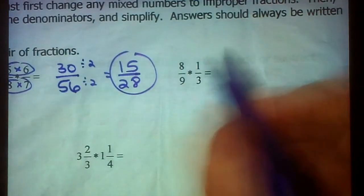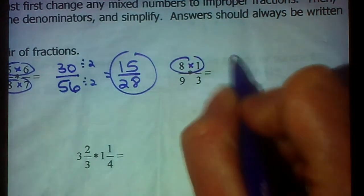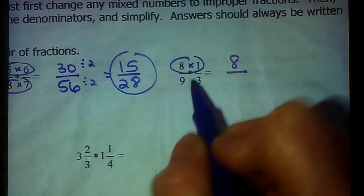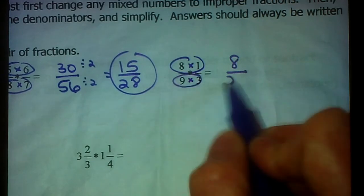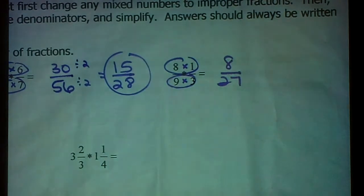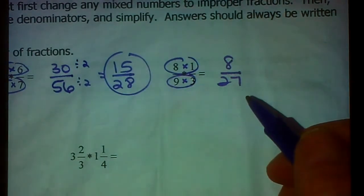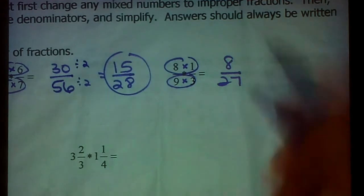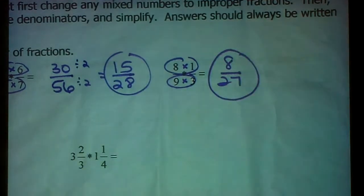Alright, next one. We have 8 ninths times 1 third. Multiply across the top. 8 times 1 is 8. Multiply across the bottom. 9 times 3 is 27. Now I'm looking at 8 and 27. The only factor they have in common is 1. That means it's already in simplest form. So that one's done.